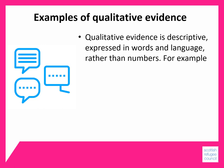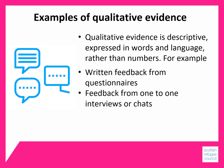Now let's think about qualitative evidence. Qualitative evidence is descriptive, expressed in words and language rather than numbers. For example, written feedback from questionnaires — a questionnaire enables people to reply to you individually and anonymously. There is also feedback from one-to-one interviews or chats; people tend to say more in an interview than they would write in a questionnaire, and this can also help with anyone who has literacy issues or who isn't confident in writing.